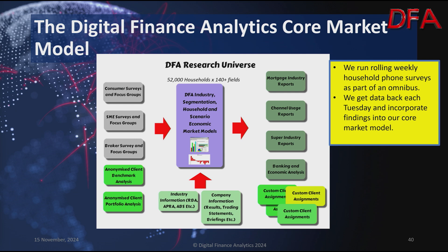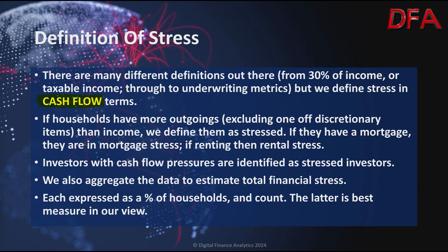Our model takes our survey information and we put it through our core market model, and that gives us the information down to the postcode level. We can slice and dice the data all sorts of different ways. I don't use a specific 30% metric of income — I look at money in and money out. If they have more money going out than money coming in, that means they have a stress problem; they have to prioritise. Every household will make different decisions. We also have that information expressed both as a percentage of households and also as the count.